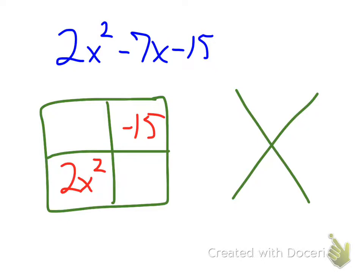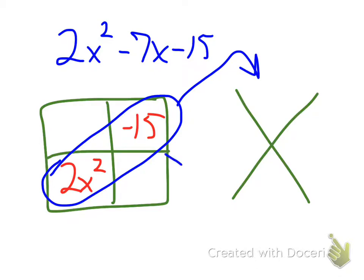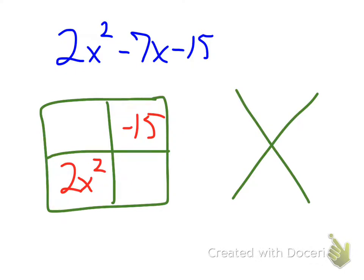I multiply these two together, and that goes on top, because these also multiply to be the same thing. So both of those diagonals are going to multiply to equal a negative 30x squared.